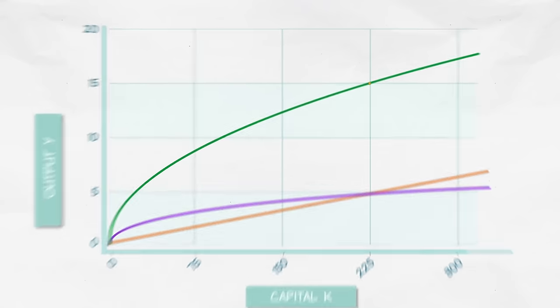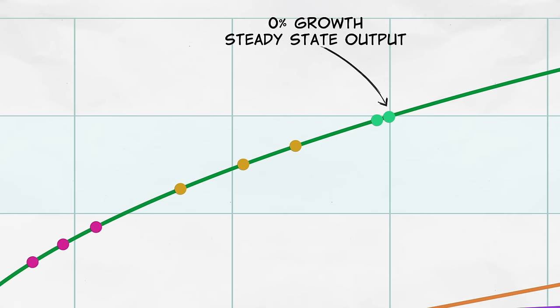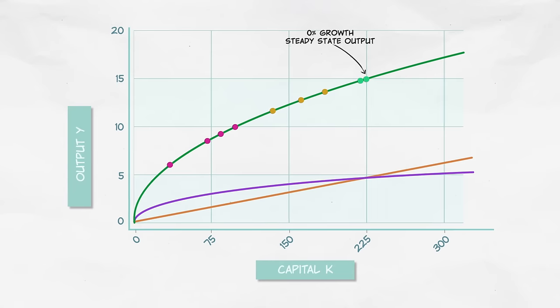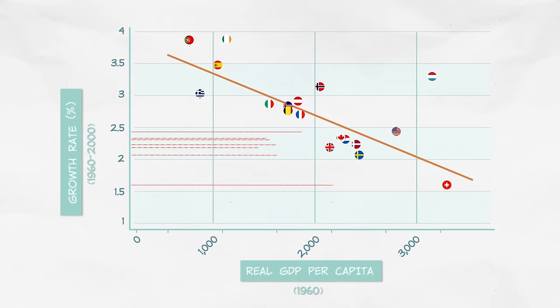The super simple Solow model, however, makes another prediction. Zero growth in the steady state. But clearly that's not what we see. The growth rates for the wealthier countries are lower than for the poorer countries, but they're not zero. The United States has been growing consistently for 200 years, and we're still growing. That doesn't sound like zero growth at all.